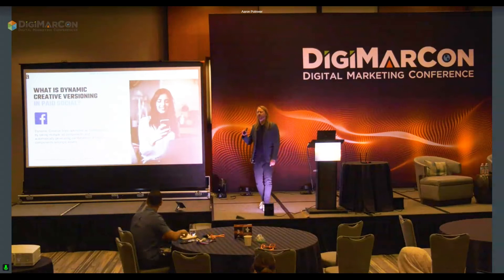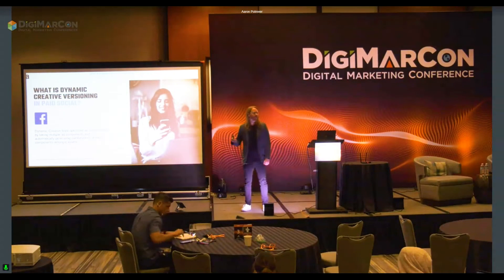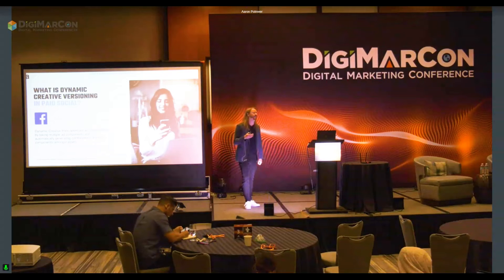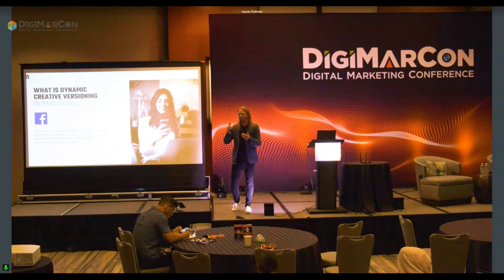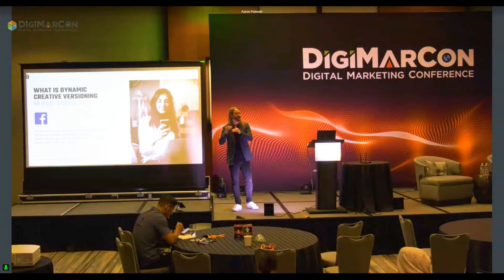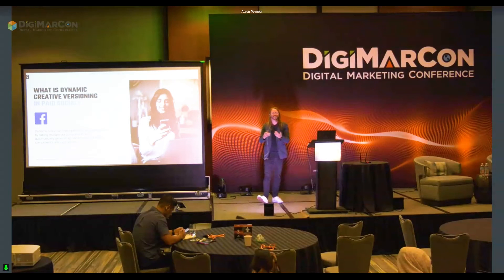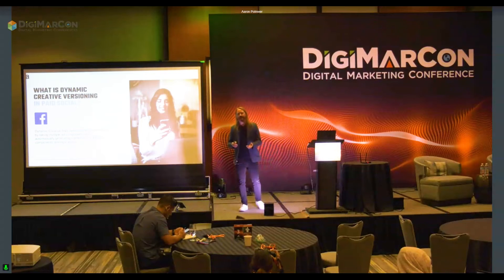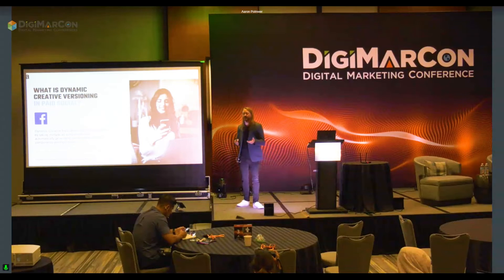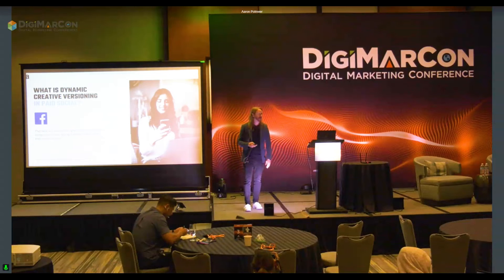I like to think of DCV — dynamic creative versioning in social — as kind of like DCO light. There are not as many levers that you need to pull. But you're looking at optimized ad combinations — the components of an ad — though it's limited in the ones you can use. And much like DCO, the system is going to converge on different components of these assets.